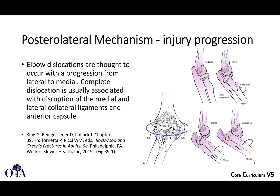The posterolateral mechanism is thought to progress from lateral to medial in a circular direction around the elbow. It begins with failure at the lateral collateral ligament, then progresses to posterolateral rotatory instability with the radial head subluxing posteriorly at the radiocapitellar joint — especially with valgus, axial compression, and supination — and then a perched position, and finally frank dislocation.